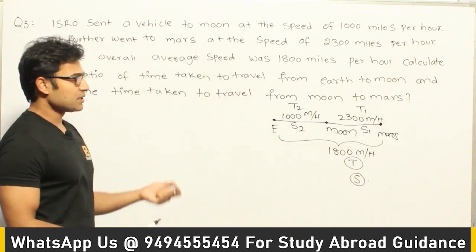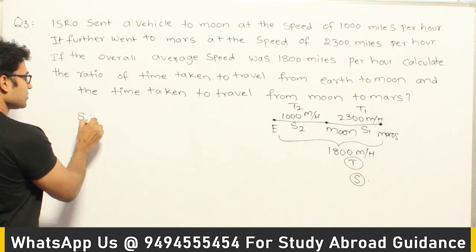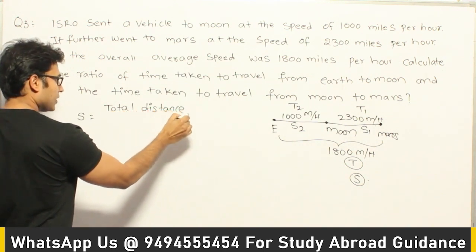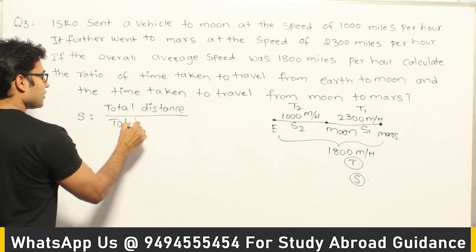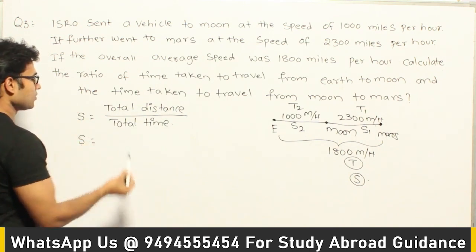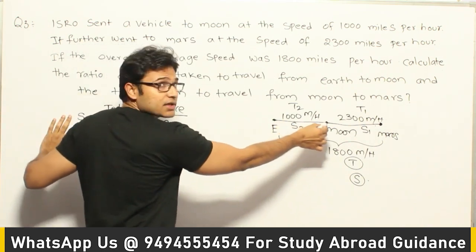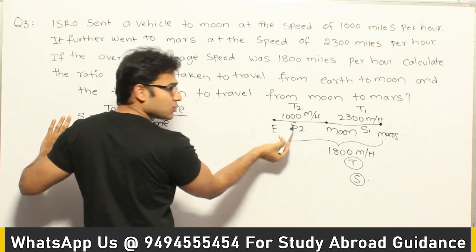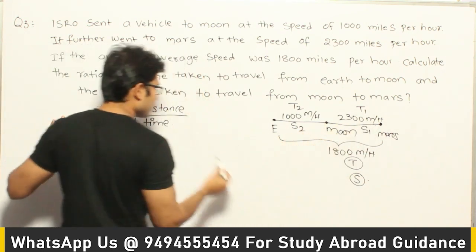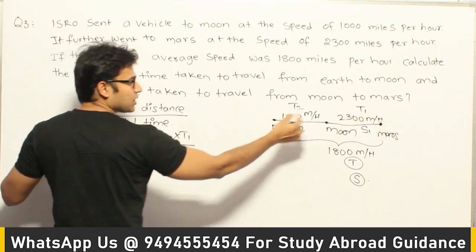Speed is distance divided by time. So the total speed S equals total distance covered divided by total time taken. Total distance is S2 × T2 (Earth to Moon) plus S1 × T1 (Moon to Mars), divided by total time T1 + T2.